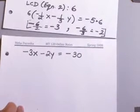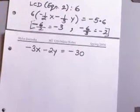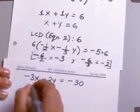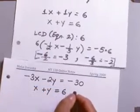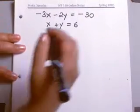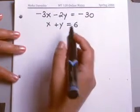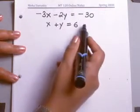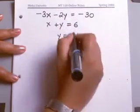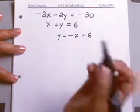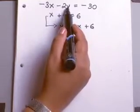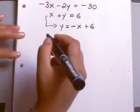Now that we've simplified our equations and gotten rid of the fractions, we can use the substitution method to solve this. Our first equation is x plus y equals 6. Let's solve this equation for y by moving x to the other side, which gives us y equals negative x plus 6. Now we can substitute this into the second equation.